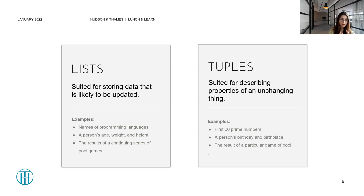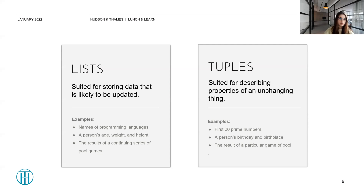Tuples, on the other hand, are suited for describing properties of an unchanging thing. For example, the first 20 prime numbers, a person's birthday and birthplace, or the result of a particular game of pool. Tuples are perfect for something like static benchmarks that you would compare your data to. It's much more convenient and suitable to use a tuple for something unchanging.